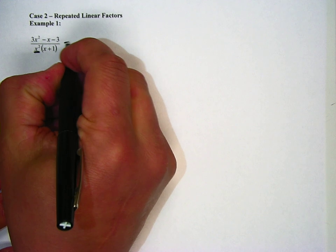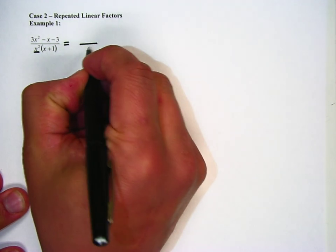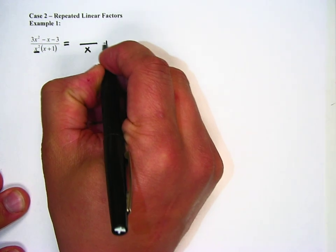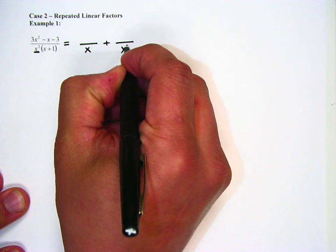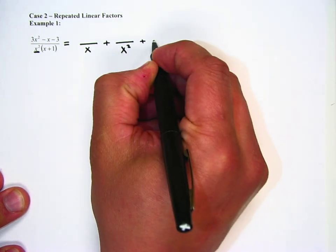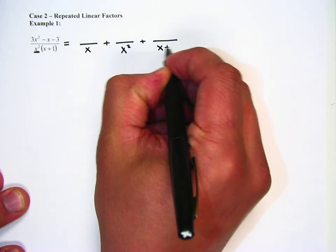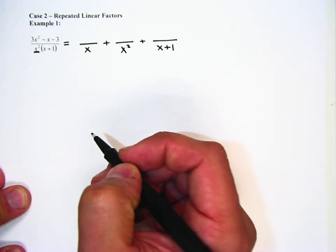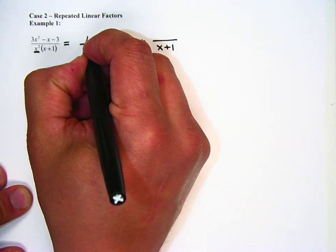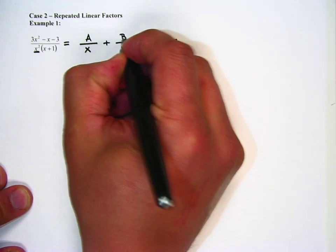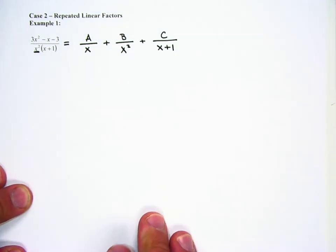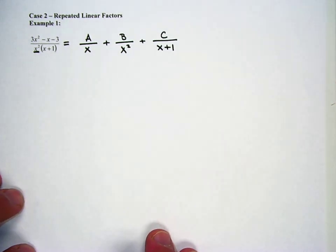So when we have repeated linear factors, we're going to put it over x to the first and x to the second, and then we have a third term too, which is x plus 1. They're all linear, so what we're going to do is we're going to put A, B, and C there. Now that we have it set up, everything else is the same as it was.